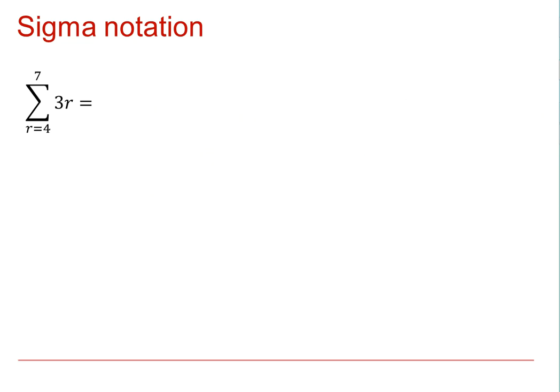In this example here, you can see that in this case, the R goes from 4 to 7. So we could write that out as 3 times 4, 3 times 5 plus 3 times 6 plus 3 times 7.